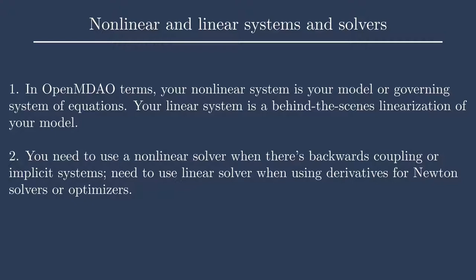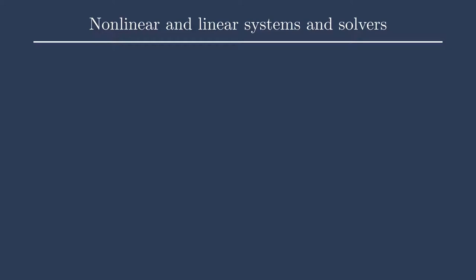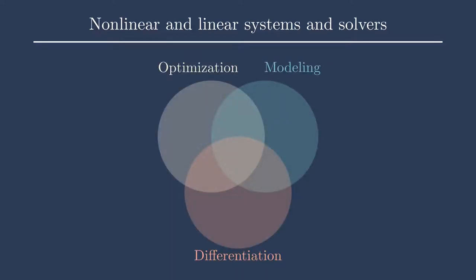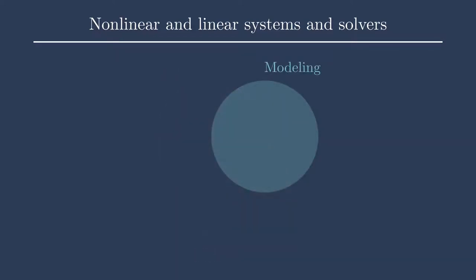My second point is: what do we do with these nonlinear and linear systems? You need to use a nonlinear solver when there's backwards coupling or implicit systems. And if you're trying to use derivatives in your model, you need an accompanying linear solver. This has to do with modeling construction, but it also influences how we do optimization and differentiation of our systems.